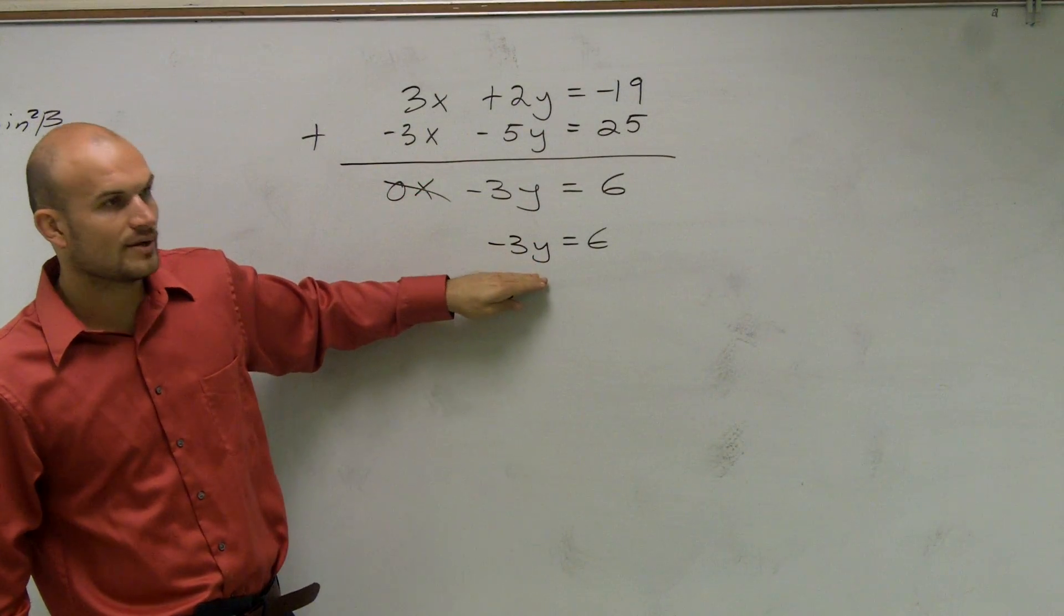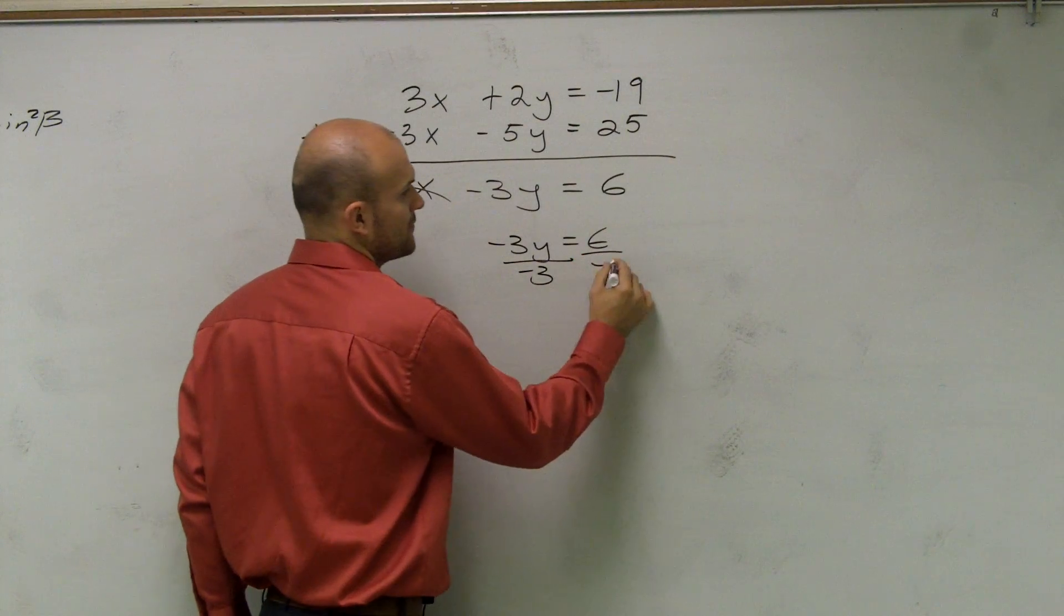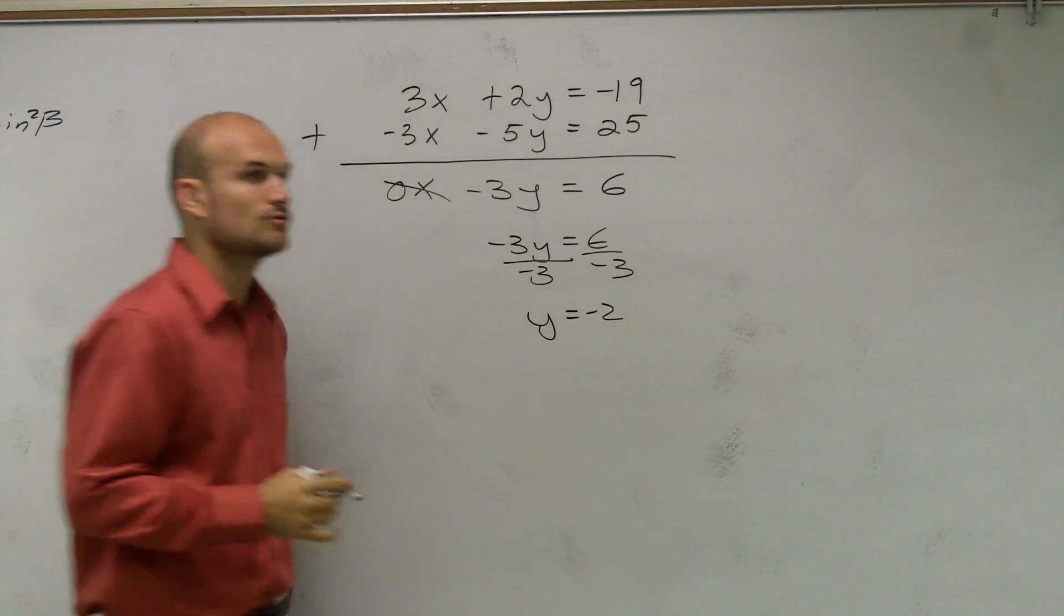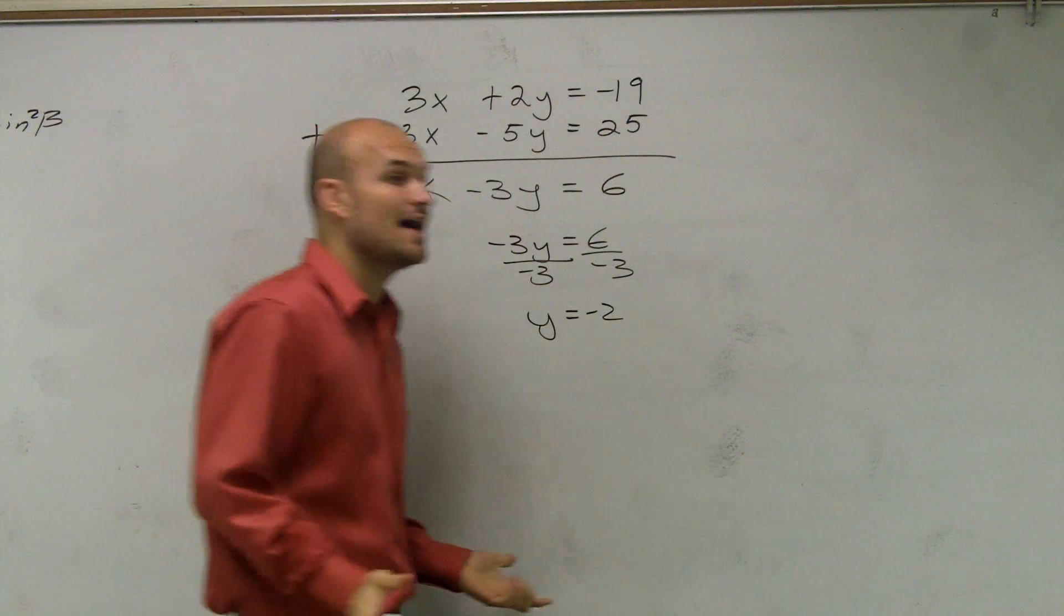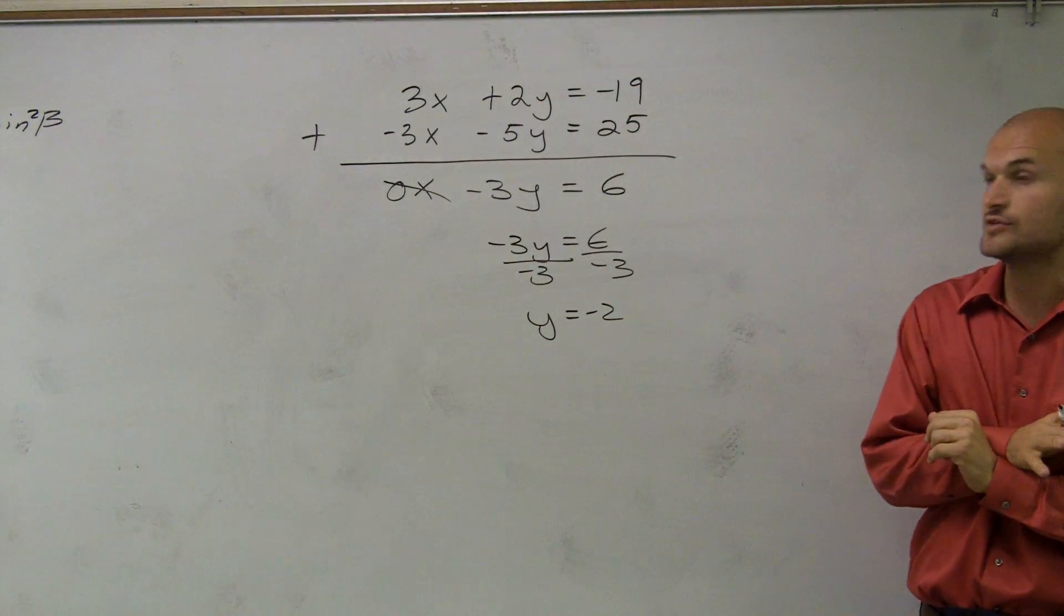So here, what I do is I now just need to solve for my y. So to solve for y, divide by negative 3 on both sides, now I get y equals negative 2. So I found the value or the value of the y-coordinate of where these two lines intersect is at negative 2.